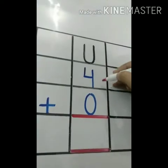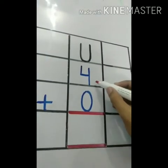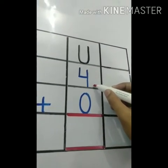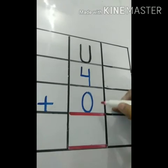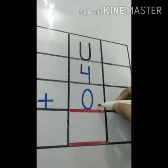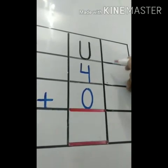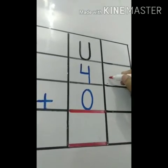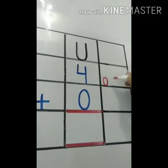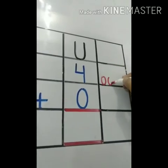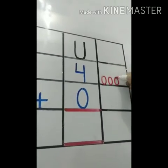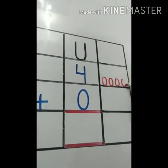The answer is nine. Now next one. What is this? This is number four. And what is this? This is number zero. Now let's make the balls: one, two, three, four.